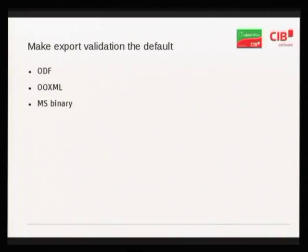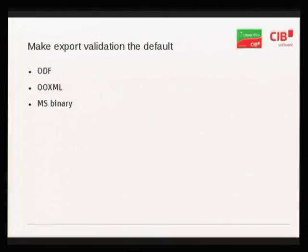Export validation default is already the case in master for ODF and OXML. The MS Binary validator we can't really distribute, and the download URL is changing so it's hard to automate — it requires Wine in a certain version — and all of that together makes it a nuisance. Since this was all about developer experience, we decided not to enable that by default, but you can add the BFF validator with a path and it will pick that up and run.